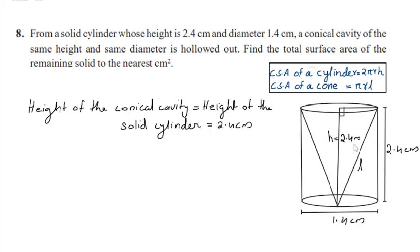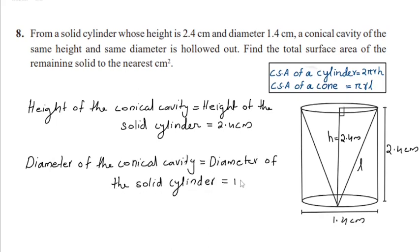The diameters of the conical cavity and the cylinder are same, which is 1.4 cm. So the radii of the conical cavity and the cylinder are 1.4 by 2, which is equal to 0.7 cm.